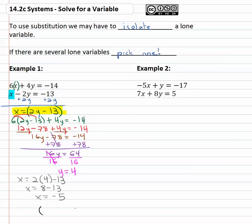And so our solution as an ordered pair, x comma y is negative five comma four.